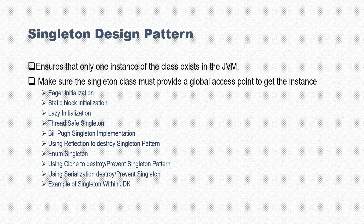Next, using reflection we will see how we can destroy a singleton. After that, we will see how we can create a singleton using enum — as you know, enum is thread-safe, and when we create a singleton using enum it is completely thread-safe. Then we will see how using clone we can destroy or prevent a singleton, and how serialization can also destroy a singleton and how we can prevent that.